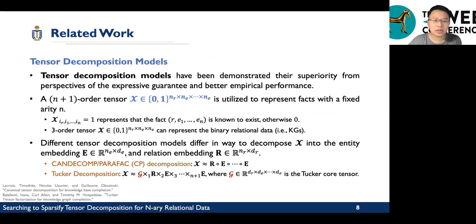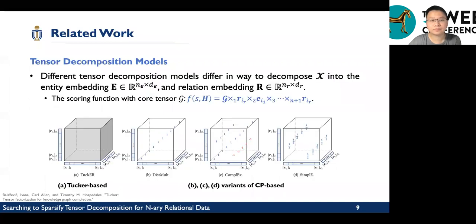Generally, different tensor decomposition models differ in the way to decompose X, the tensor, into the entity embedding and relation embedding. There are two main tensor decomposition models adopted in the embedding models. First, CP decomposition, and second, Tucker decomposition. Note that Tucker decomposition has a core tensor G. Here is an illustration about these two models. This is Tucker decomposition. This is the Tucker core tensor and this is relation embedding and entity embedding. The core tensor encodes domain knowledge and the rest of the string. SimplE is actually the variance of CP-based. We also can see that these are all special cases of Tucker.